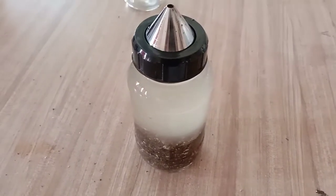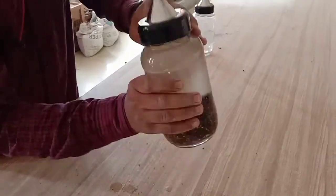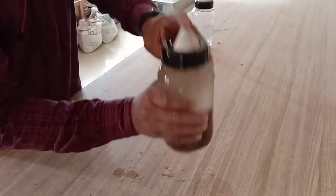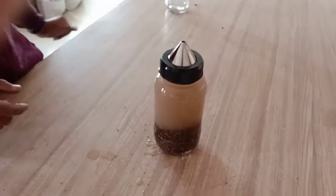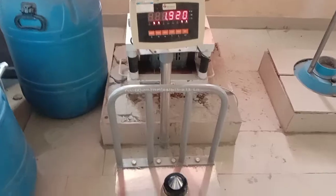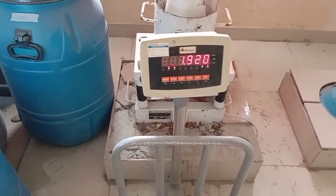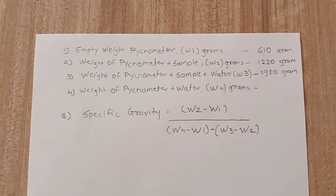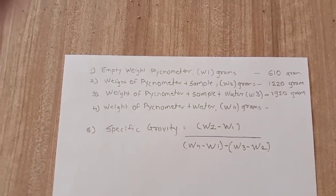Now I am going to shake this pycnometer rigorously. Now we are going to take the weight of the pycnometer — that is water plus sample plus pycnometer. The weight comes out to be 1 kg 920 grams, which I have written here as 1920 grams.